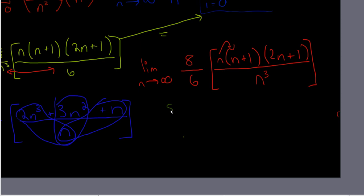So now we get 8 over 6 times the limit as n goes to infinity of 2n cubed over n cubed. I forgot to write the cube. Sorry. Plus 3n squared over n cubed plus n over n cubed.